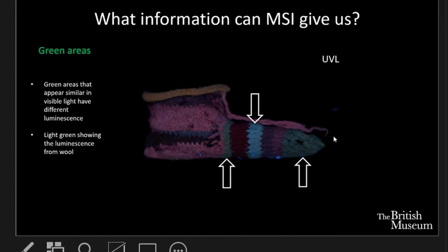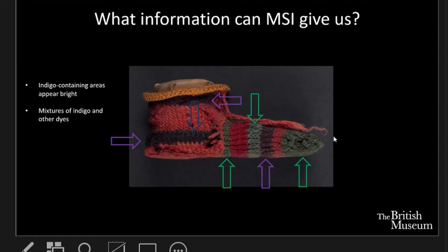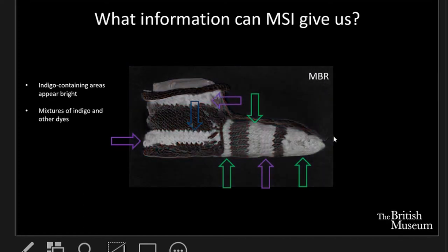When we suspect that mixes with a blue dye such as indigo might be present, like in these purple or green areas, we can use a technique known as multiband reflectance subtraction, developed especially to identify the presence of indigo. This technique takes two images in two specific bands — one where indigo is known to have very high reflectance and one where it has low reflectance — and subtracts them to give a map of indigo presence. The areas that appear bright white are very likely to contain indigo, coinciding with the purple and green areas and also with that little blue area noted at the top.